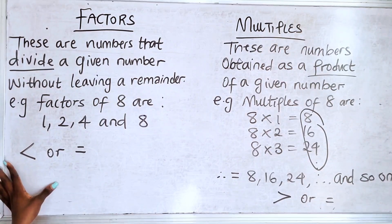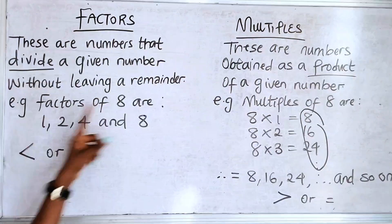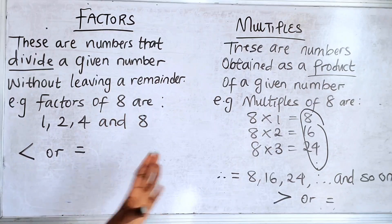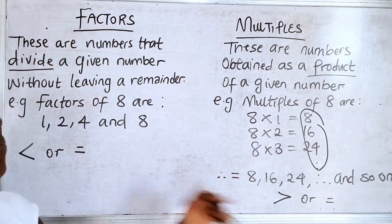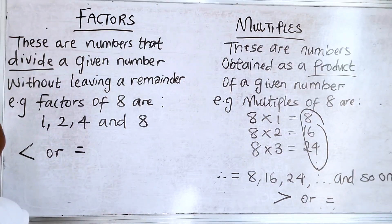Now, the factors of 8 has to always be less than or equal to 8. As you can see, these numbers are less than 8 or equal to 8. But the multiples of 8 will always be greater than or equal to 8. I hope we're getting it.